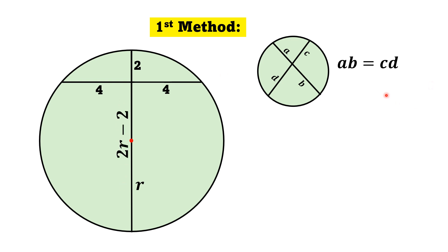Using this chord theorem, 2R minus 2 multiplied by 2, that will be equal to 4 into 4. Simplifying this, we will get 4R minus 4 is equal to 16. And from here, if we take 4 on the right, 4R will be equal to 20.